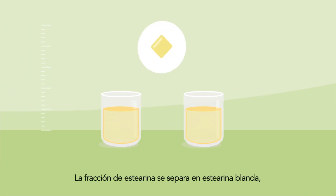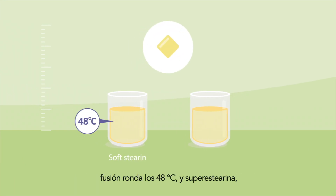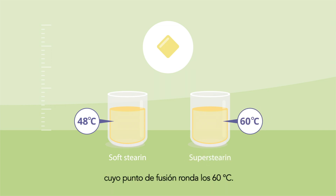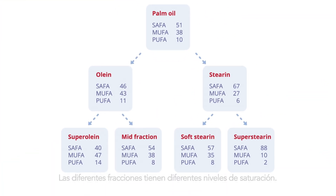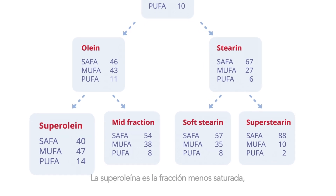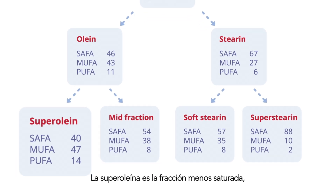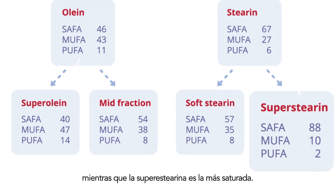The stearin fraction is separated into soft stearin with a melting point of around 48 degrees Celsius and super stearin with a melting point of around 60 degrees Celsius. The different fractions have different levels of saturation, that is why the melting points are different. Superolein is the least saturated, super stearin the most.